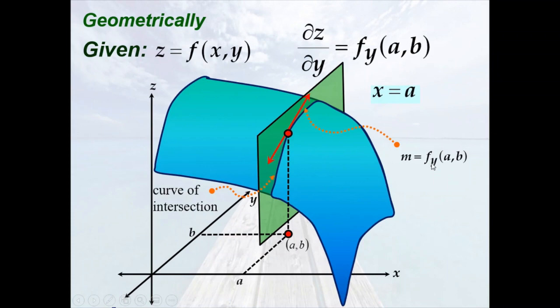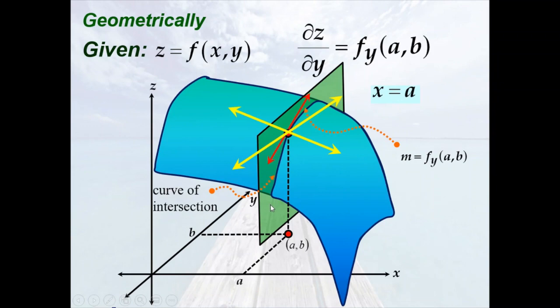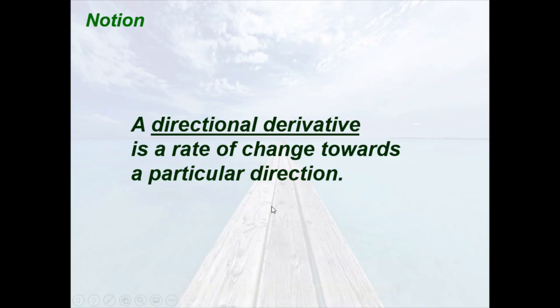This is also the rate of change of the function in the direction parallel to the y-axis. So in general, when getting partial derivatives, we are just getting the rate of change in the direction parallel to the coordinate axes x, y, and z. So what if we want to know the rate of change in some other direction — in any particular direction?